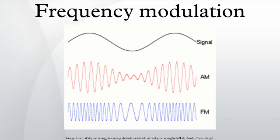In radio systems, frequency modulation with sufficient bandwidth provides an advantage in canceling naturally occurring noise. Frequency modulation is known as phase modulation when the carrier phase modulation is the time integral of the FM signal.